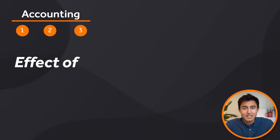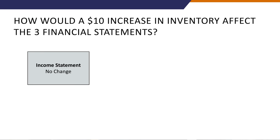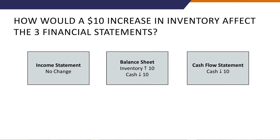Third accounting question: how would a $10 increase in inventory affect the three financial statements? Inventory is an asset expected to be sold. On the income statement, there would be no effect — inventory is only recorded as an expense when actually sold, so if it stays in the warehouse it doesn't count yet. On the balance sheet, inventory would be up by $10 and cash down by $10, so it still balances. On the cash flow statement, cash would go down by $10.